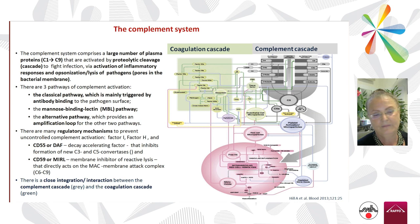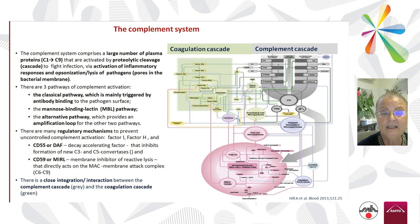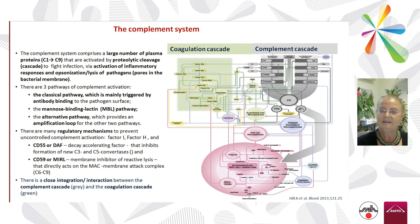These include Factor H, and most importantly for our topic, CD55 or DAF — decay accelerating factor — that inhibits the formation of new C3 and C5 convertase. And CD59 or MIRL, which inhibits directly the membrane attack complex.